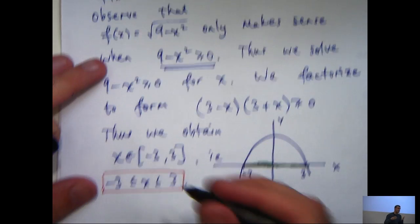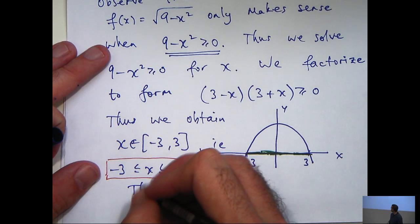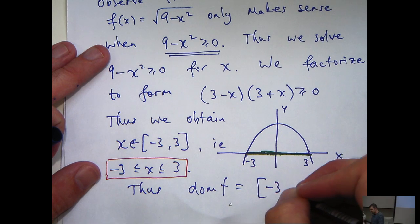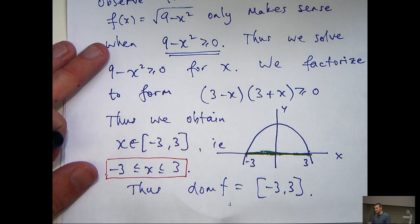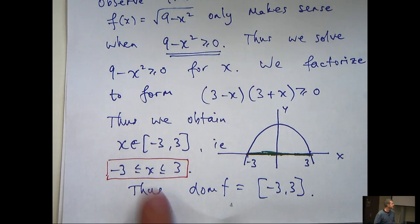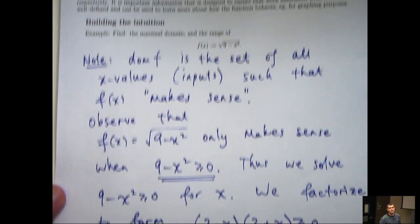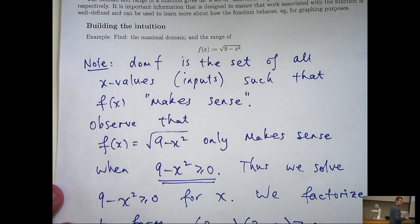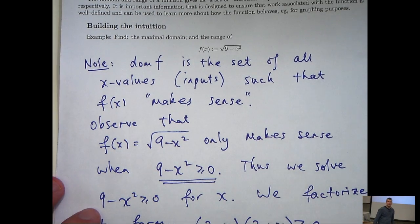So let's make a conclusion. The domain of f is just this interval here. So for every point in this interval, f of x will make sense. All right, so that's the first part of the problem. Let's move on to the second part.